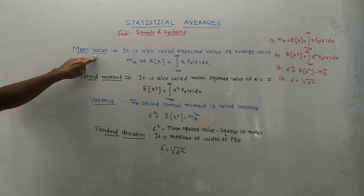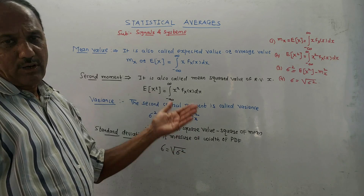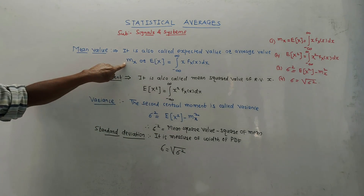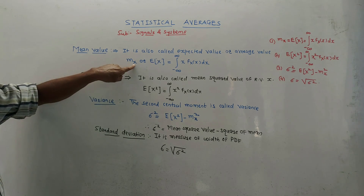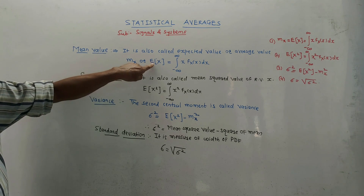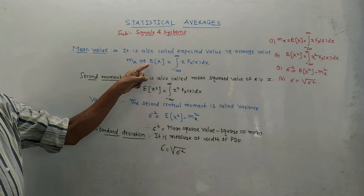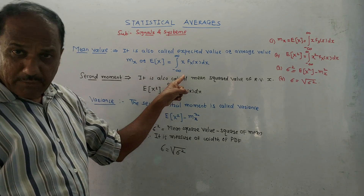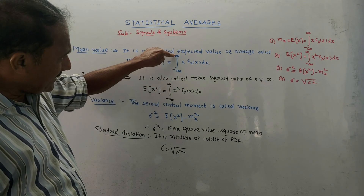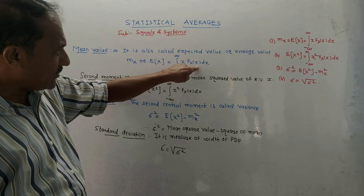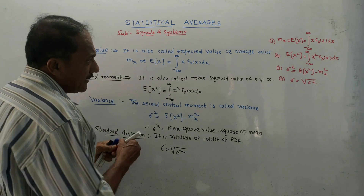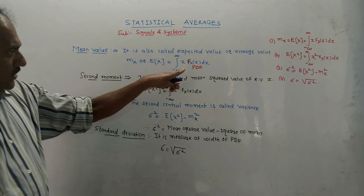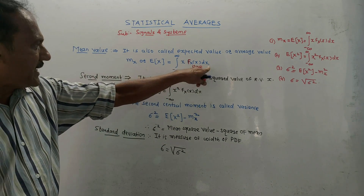First term: mean value. It is also called average value or expected value. Notation is small mx, or E of x, read as expectation of random variable x. The mathematical equation is integration from minus infinity to plus infinity of x times fx(x) dx, where small f represents the PDF. So it is integration of x into PDF dx.